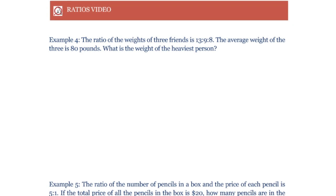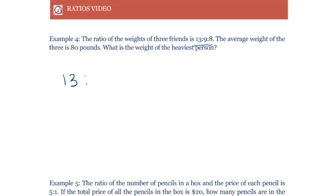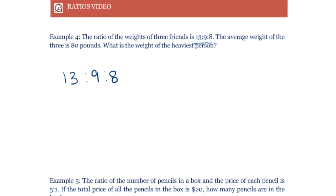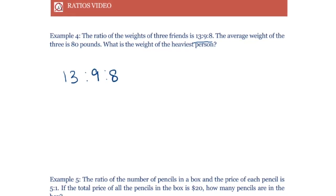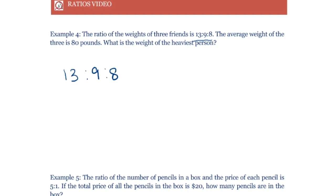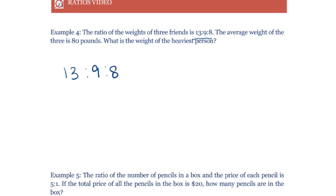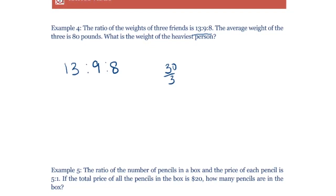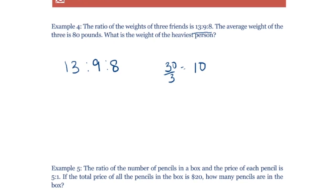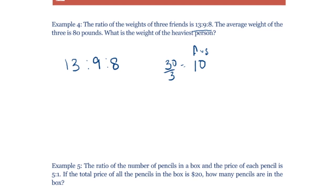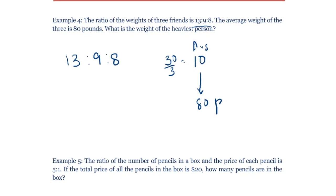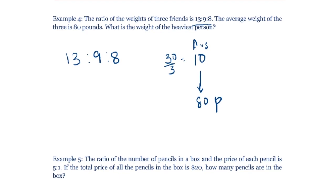Another example: the ratio of weights of three friends is 13 to 9 to 8, and the average weight of the three is 80 pounds. To find the average in ratio terms, we add 13 plus 9 plus 8 to get 30, then divide by 3 to get 10. So in ratio terms the average is 10.